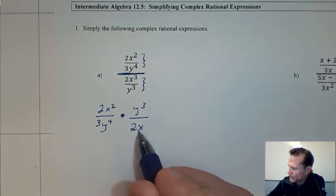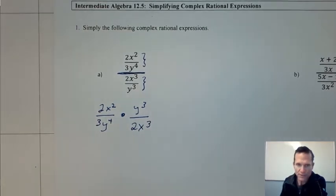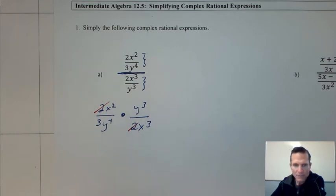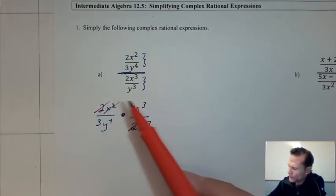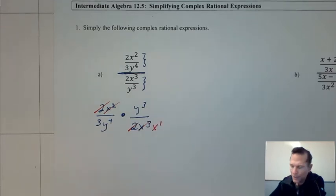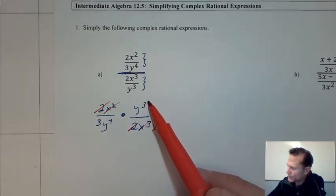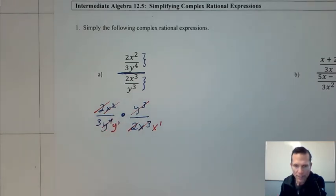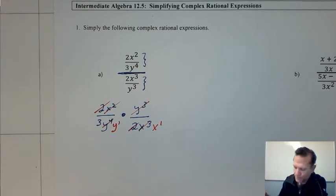Writing the reciprocal of the second fraction, the problem doesn't look as scary. We just have it into a multiplication of rational expressions and we can do our cross canceling. The twos will cancel out, these x squareds will cancel out and knock this down to x to the first, this y to the third is going to cancel out and knock this down to y to the first.